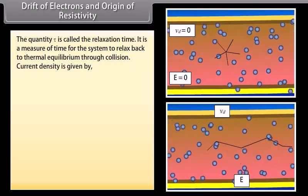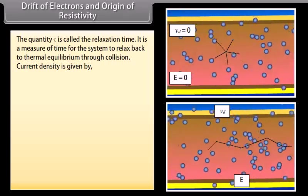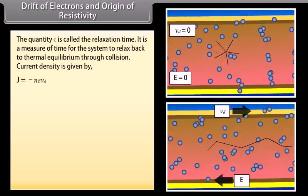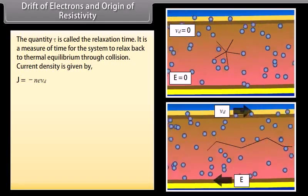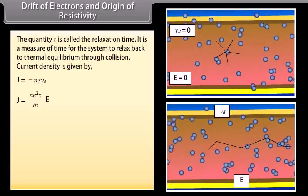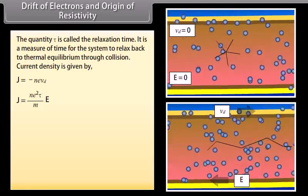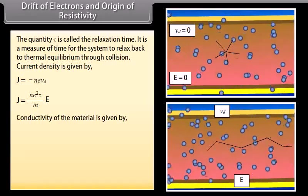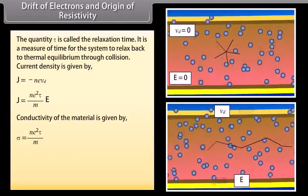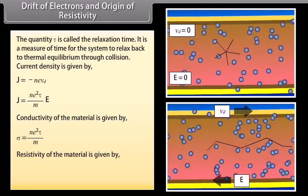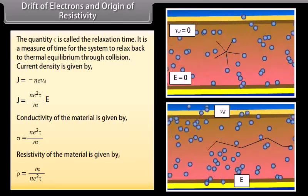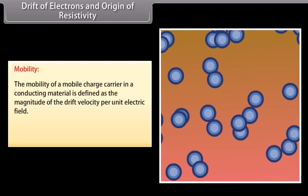Current density is given by J = −neV_D. Substituting V_D, we get J = (ne²τ / m) × E. Hence conductivity σ = ne²τ / m, and resistivity ρ = m / (ne²τ). The mobility of a mobile charge carrier in a conducting material is defined as the magnitude of the drift velocity per unit electric field: μ = V_D / E = eτ / m.